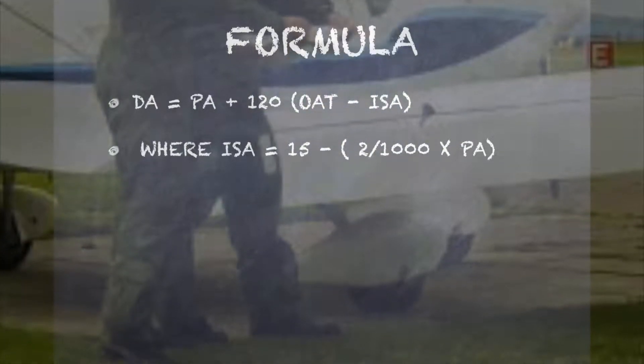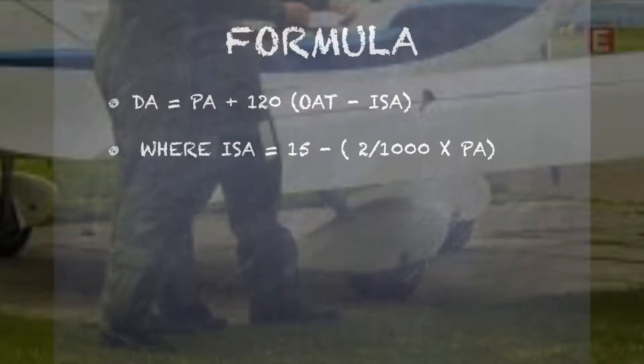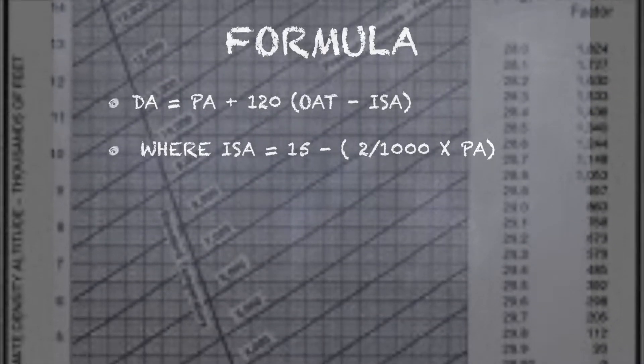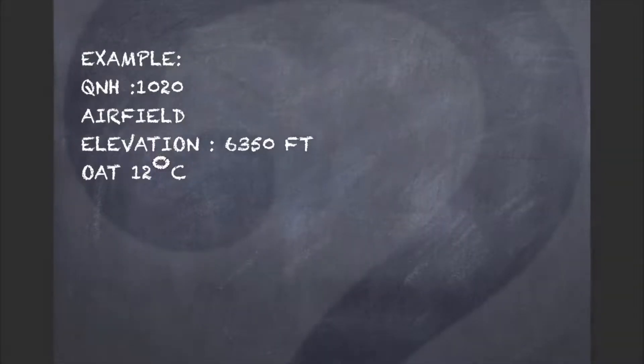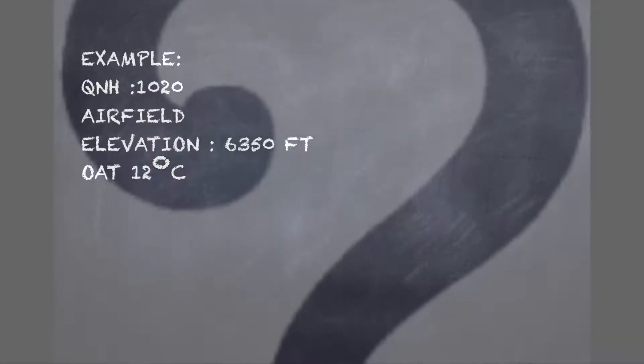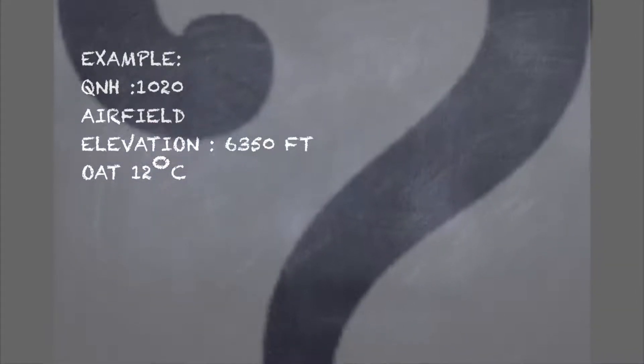Taking one example: consider QNH is 1020, field elevation is 6350 feet, and outside air temperature is 12 degrees. So firstly I need to find out pressure altitude.